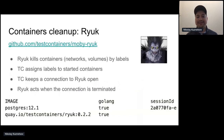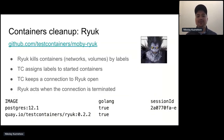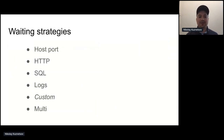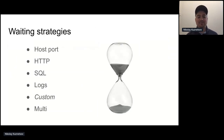To perform container cleanup, there is a special container called Ryuk, which gets started along with your main container. It gets some specific labels assigned, and then Ryuk can queue the main database containers by those specified labels. So after the end of the test, your environment is clean — you have no zombie containers running.